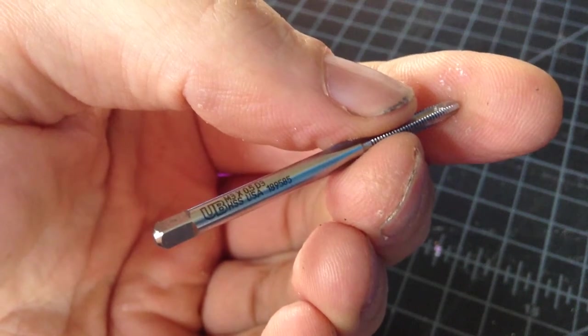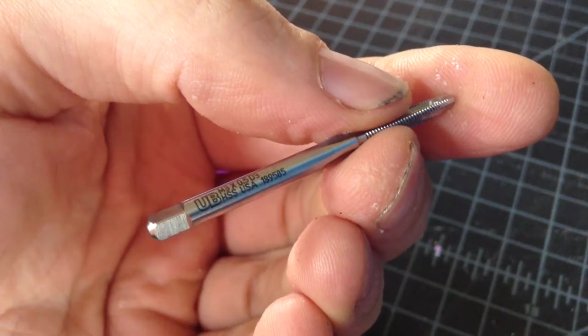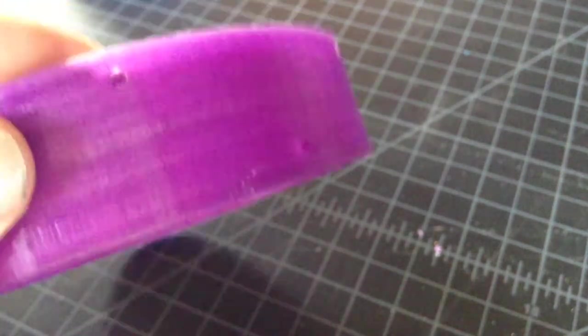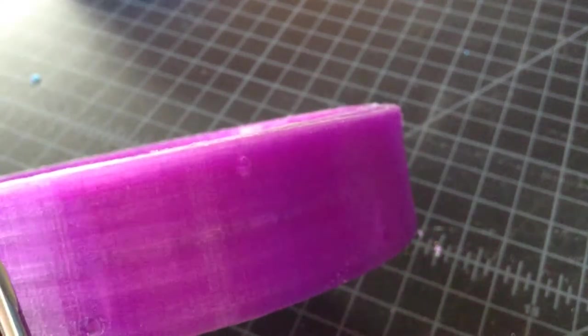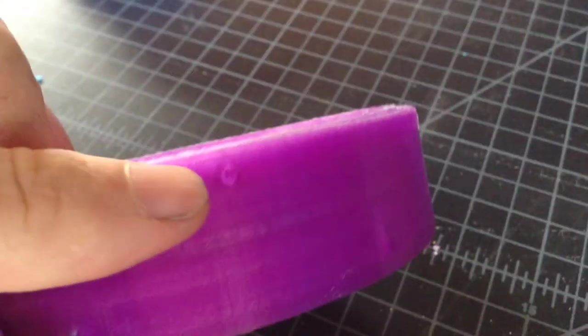So what we have here is a 3mm tap. We're going to use that to cut the threads in our 2-liter coupler here. You can see there are tiny little holes that can receive a bolt.